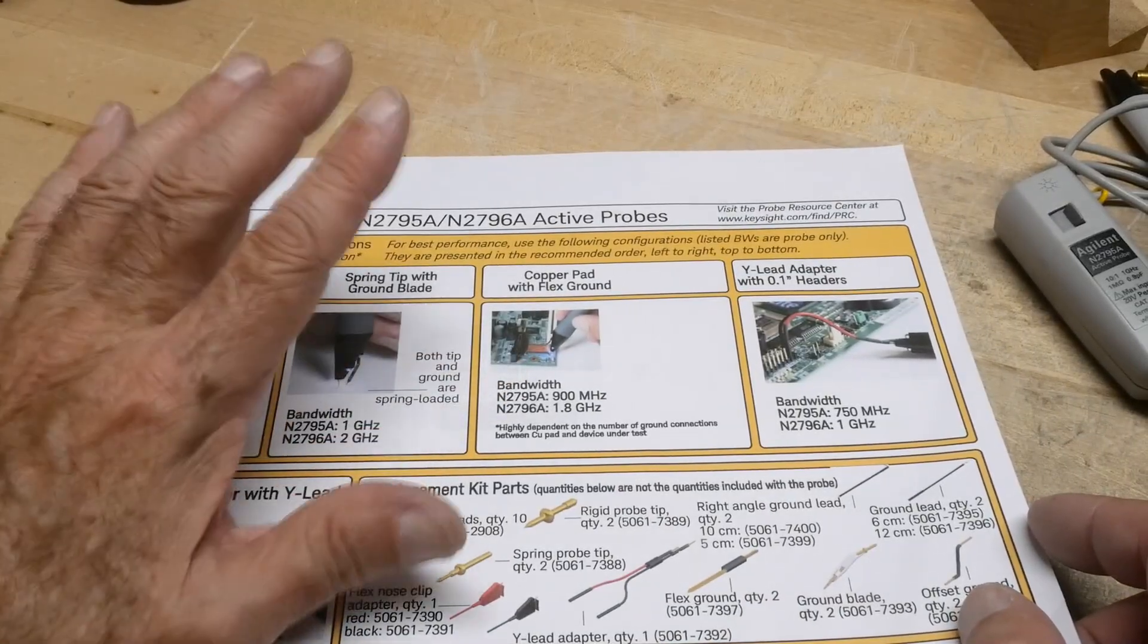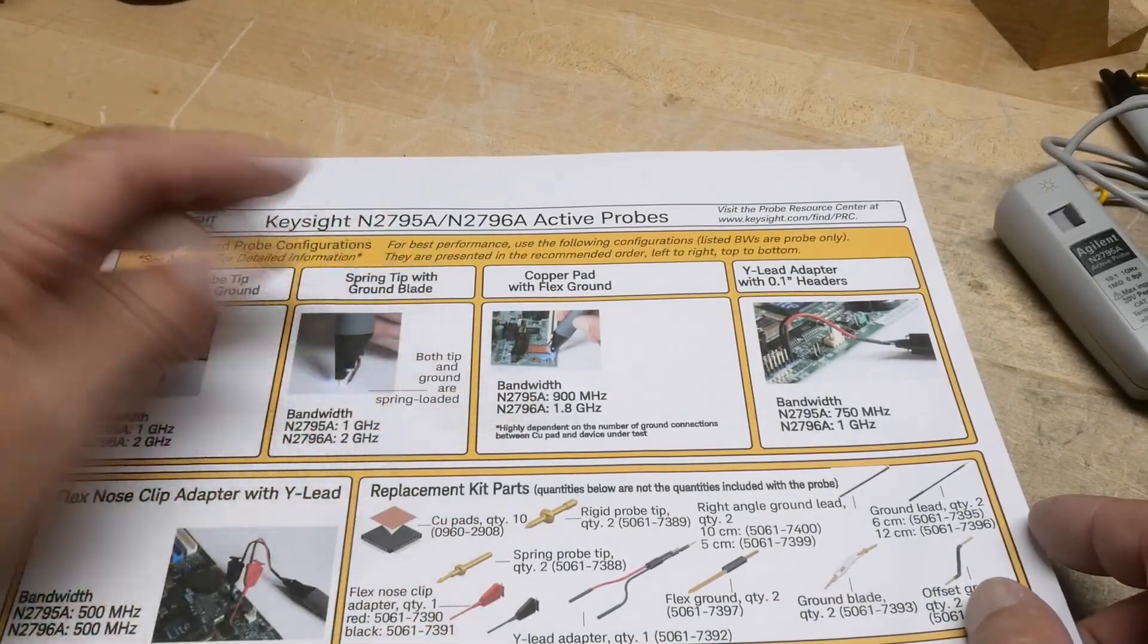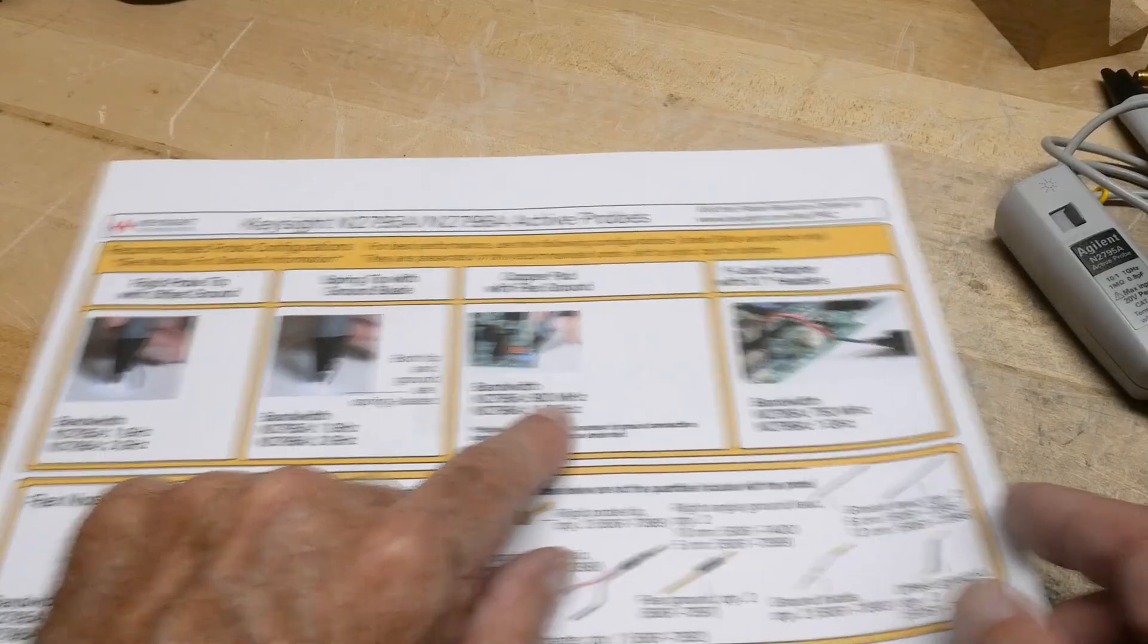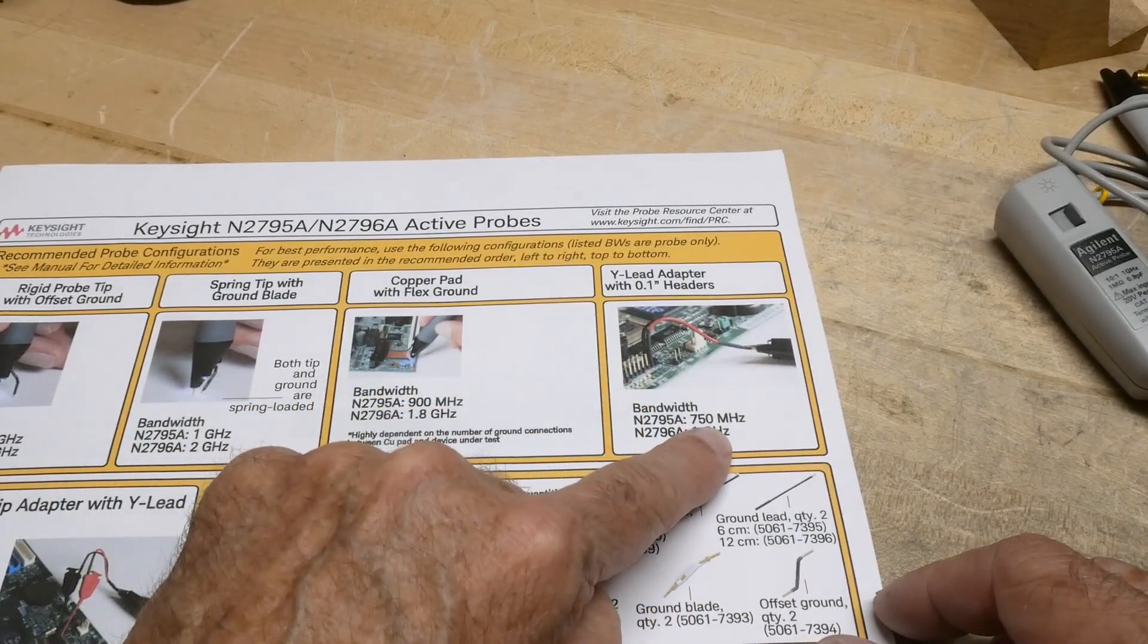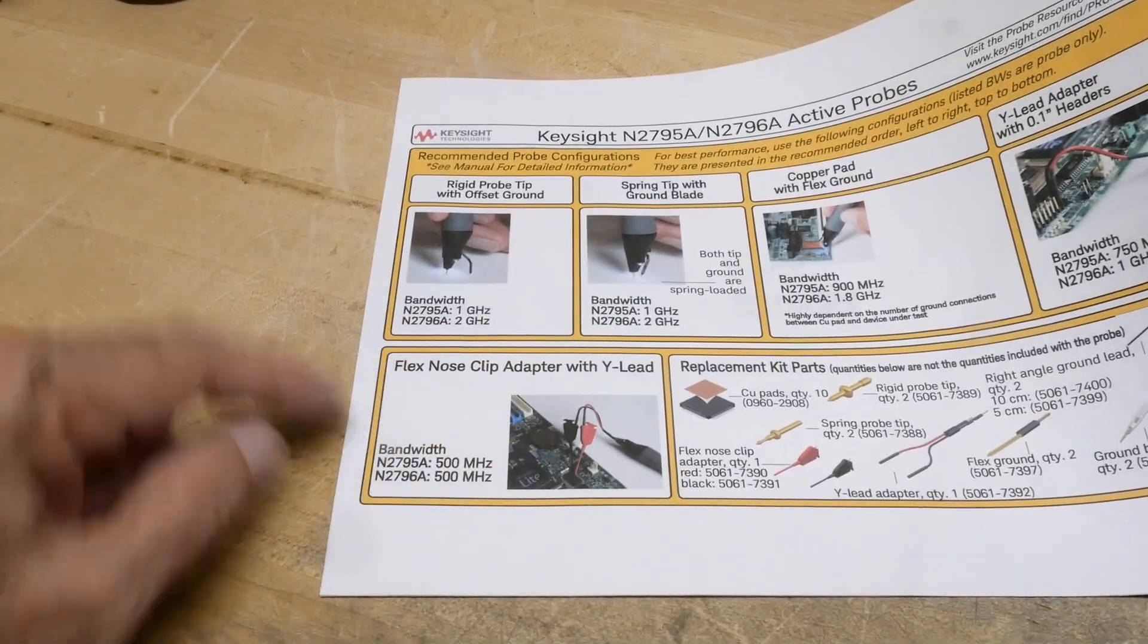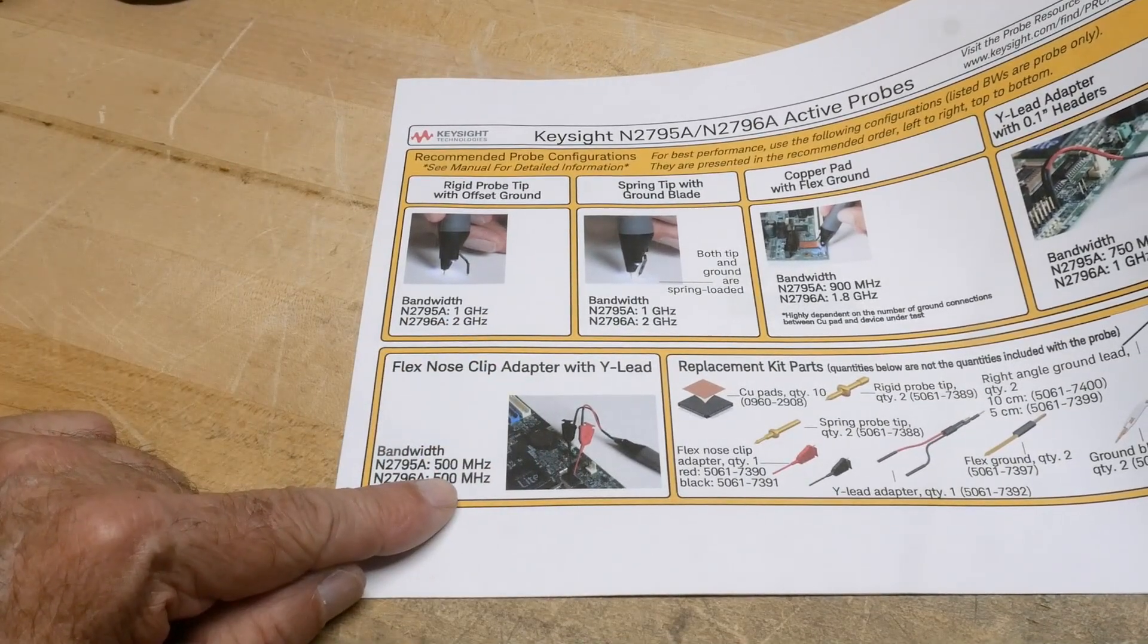If you're using a copper pad to find a ground, you can derate them a bit, 900 megahertz. If you're using some wires, you can get maybe 750 out of it. If you're using little clip leads with it, you can go up to 500 megahertz.